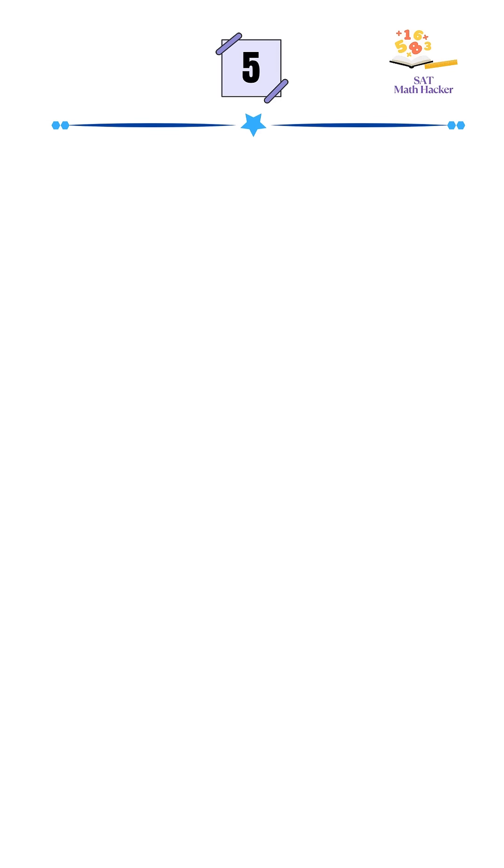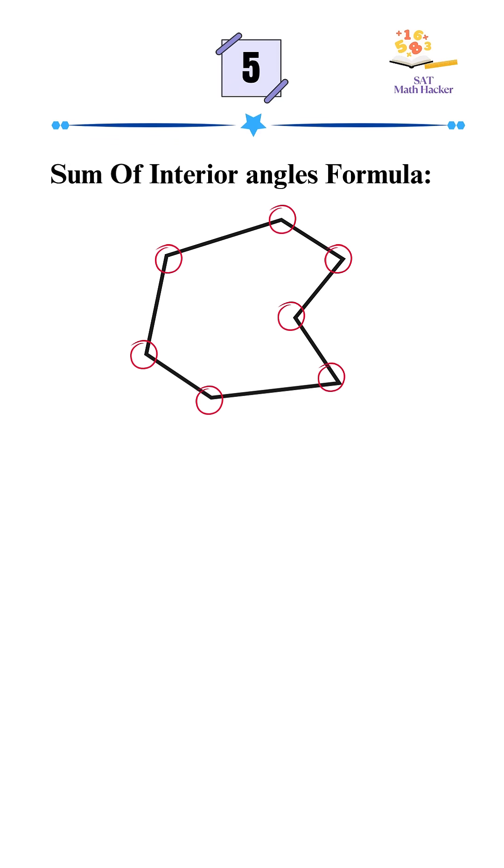First, remember, the sum of all interior angles in any n-sided polygon is (n - 2) × 180. So for a nine-sided polygon, that's (9 - 2) × 180, which gives us 7 × 180, or 1,260 degrees total.